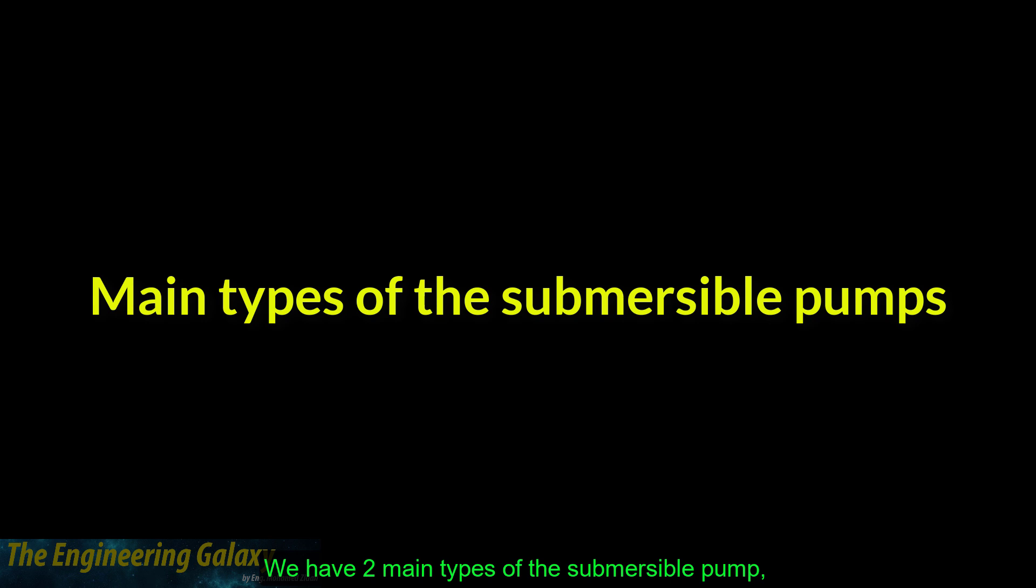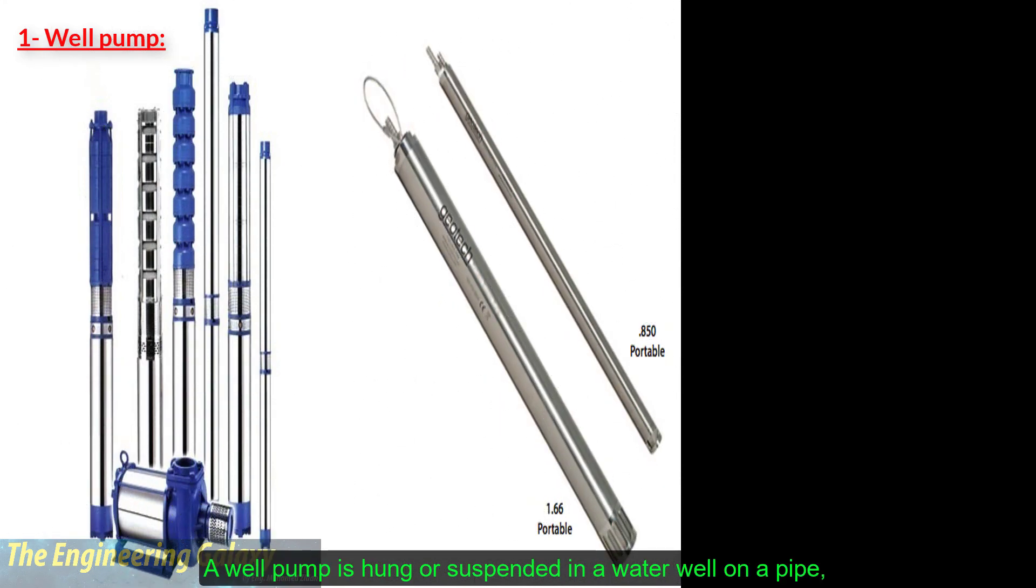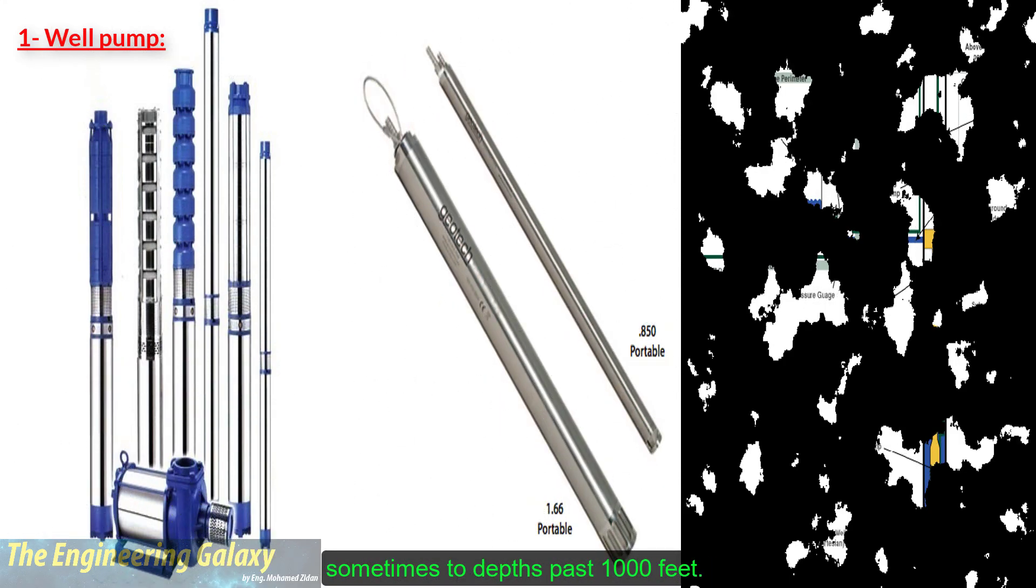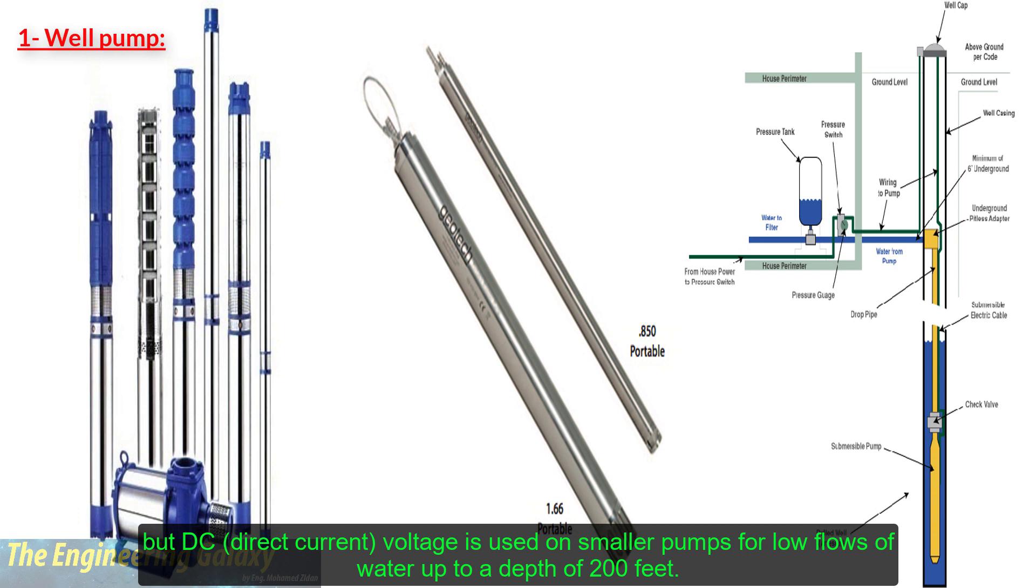We have two main types of submersible pump. The first type is well pump. A well pump is hung or suspended in a water well on a pipe, sometimes to depths past 1000 feet. Well pumps are powered by AC voltage, but DC voltage is used on smaller pumps for low flows of water up to depths of 200 feet.